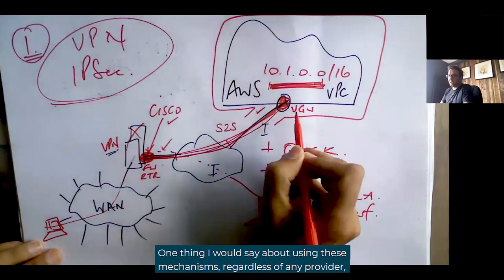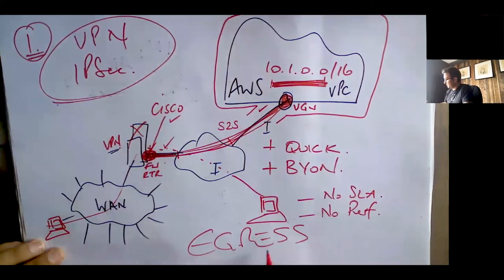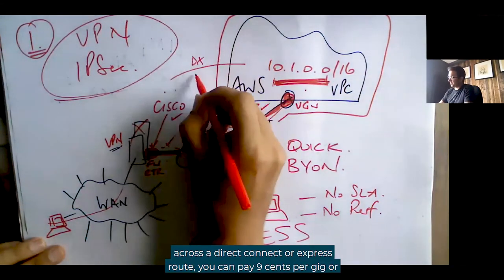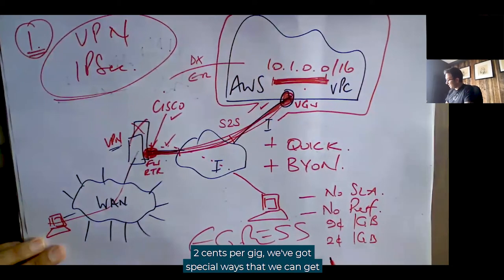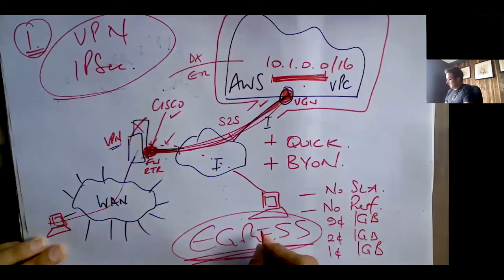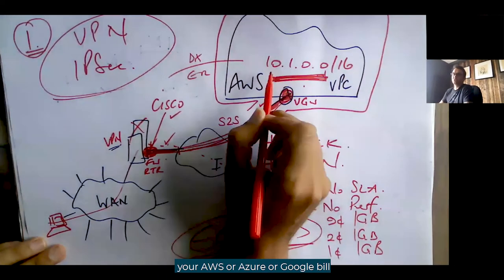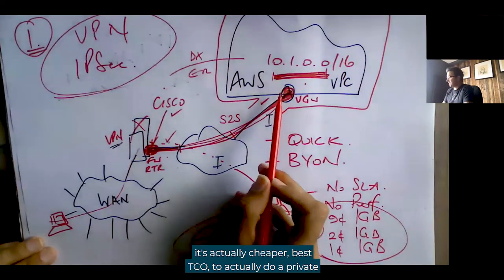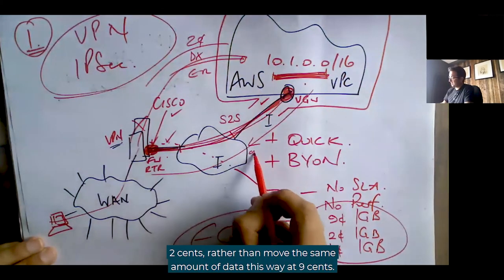Data egress — a lot of people forget about this. If you move data from the cloud out to the internet you can pay nine cents per gig, or two cents per gig via private connection. We've got ways to get it down to one cent per gig. You will pay data egress charges — there's no getting away from it. Just be wary of these charges at the bottom of your AWS or Google bill. If you've got large amounts of data, the best TCO is actually to do the private connection and move data at two cents rather than nine cents via the internet.